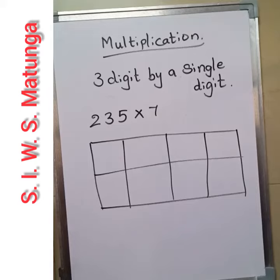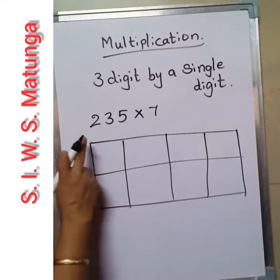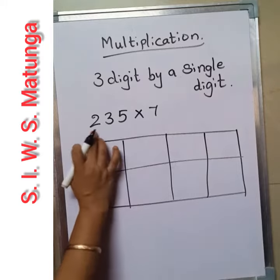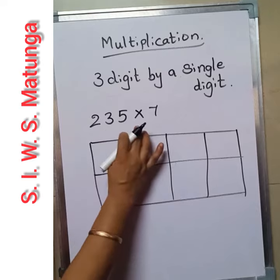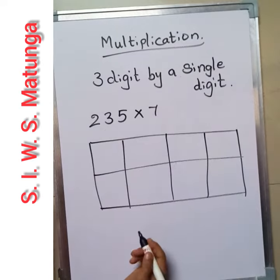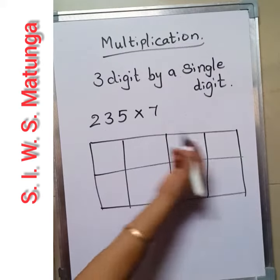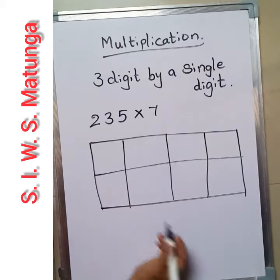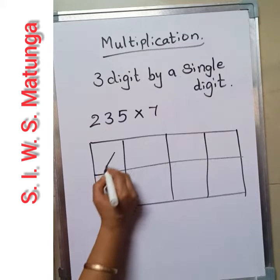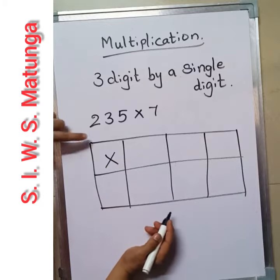Last unit we learned 2-digit multiplied by 2-digit. Here we are going to learn 3-digit multiplied by single digit. For that, the number I have taken is 235 multiplied by 7. Now this number we have to expand and write. First, put the multiplication mark.